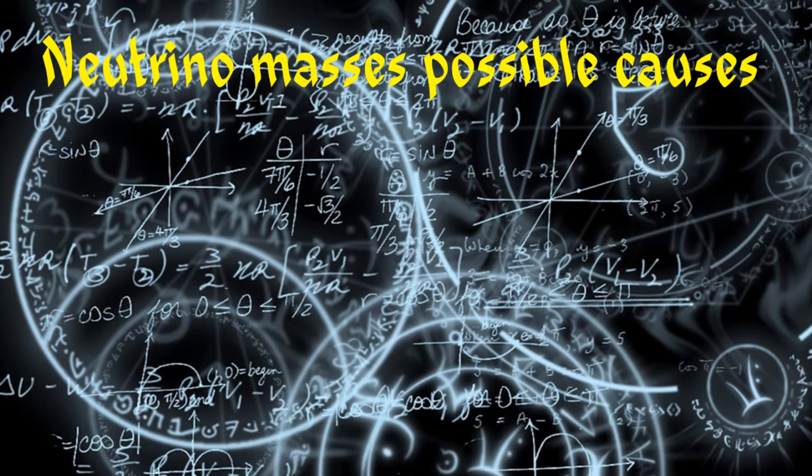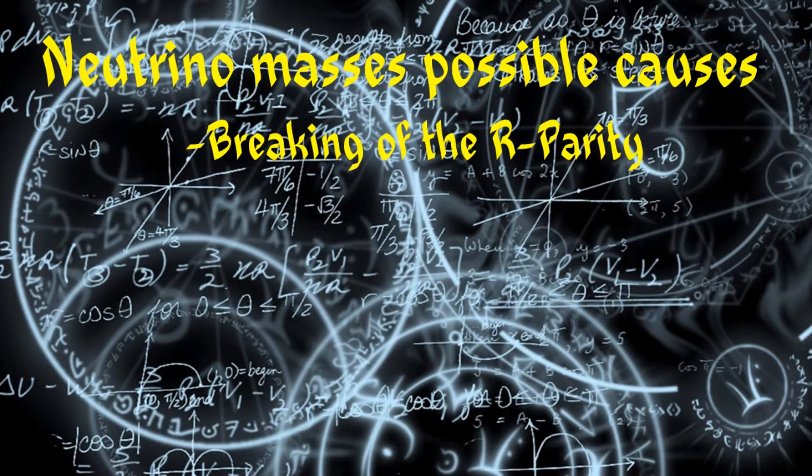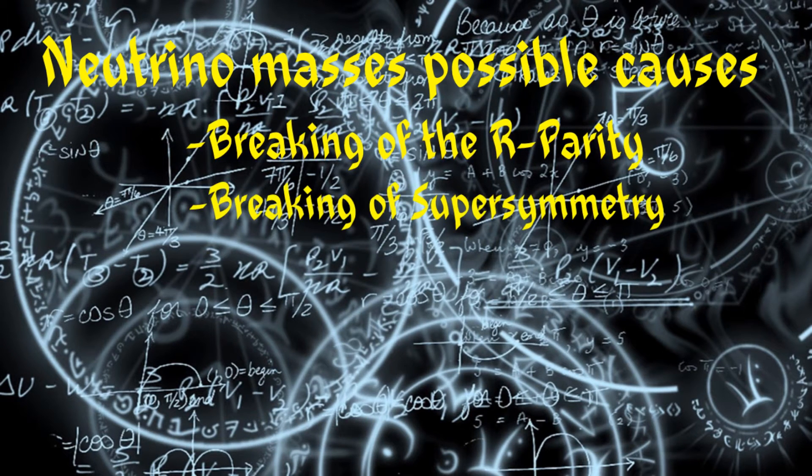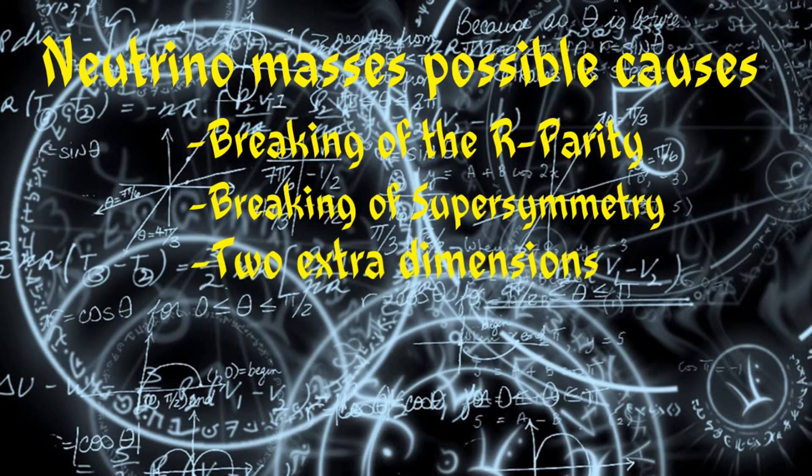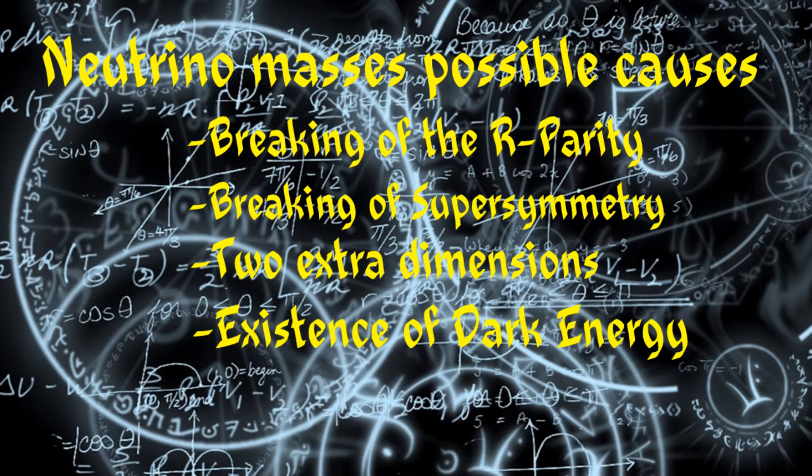Neutrino masses can be caused by a breaking of the R-parity. Other examples include the breaking of supersymmetry, the possibilities of two extra dimensions, and the existence of dark energy. But for this video, we'll stick with the first option.